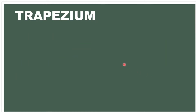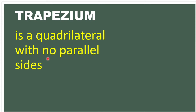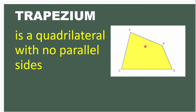We also have a trapezoid with no parallel sides. It has the same property with the general quadrilateral. As we can see in the example, it has no parallel sides.